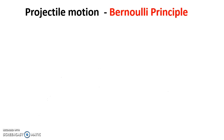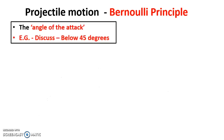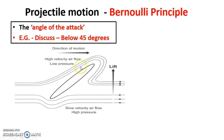Let's get our first example and apply this to the discus. We're going to look at the first factor affecting the Bernoulli principle — the angle of attack — with the discus below 45 degrees. The direction of motion is going this way. Somebody has let their discus go out of their hand and it's going up in this direction.